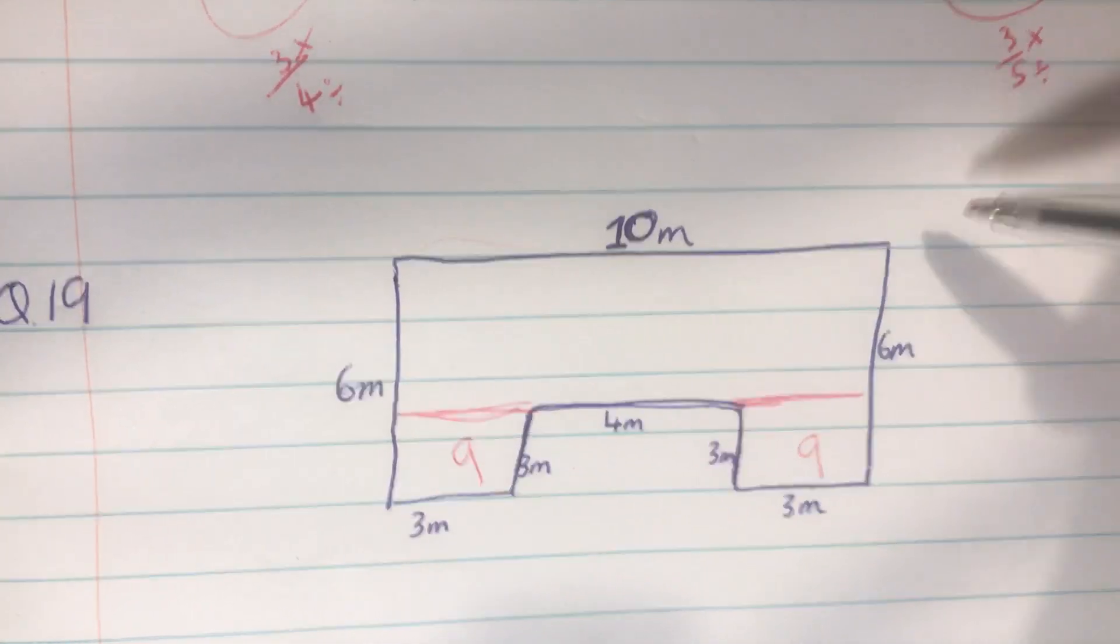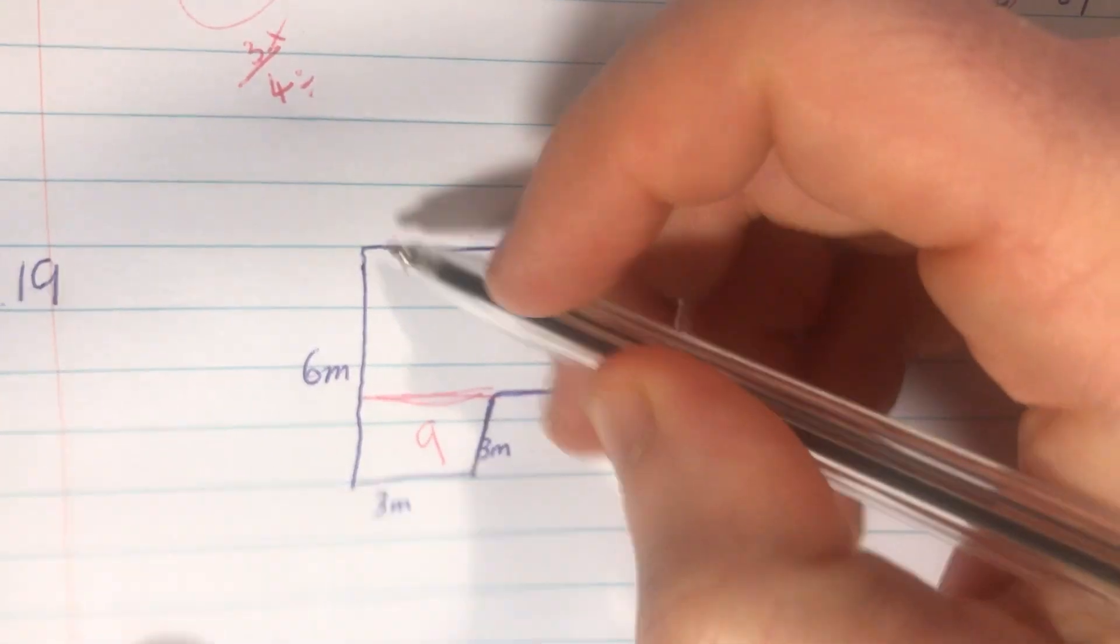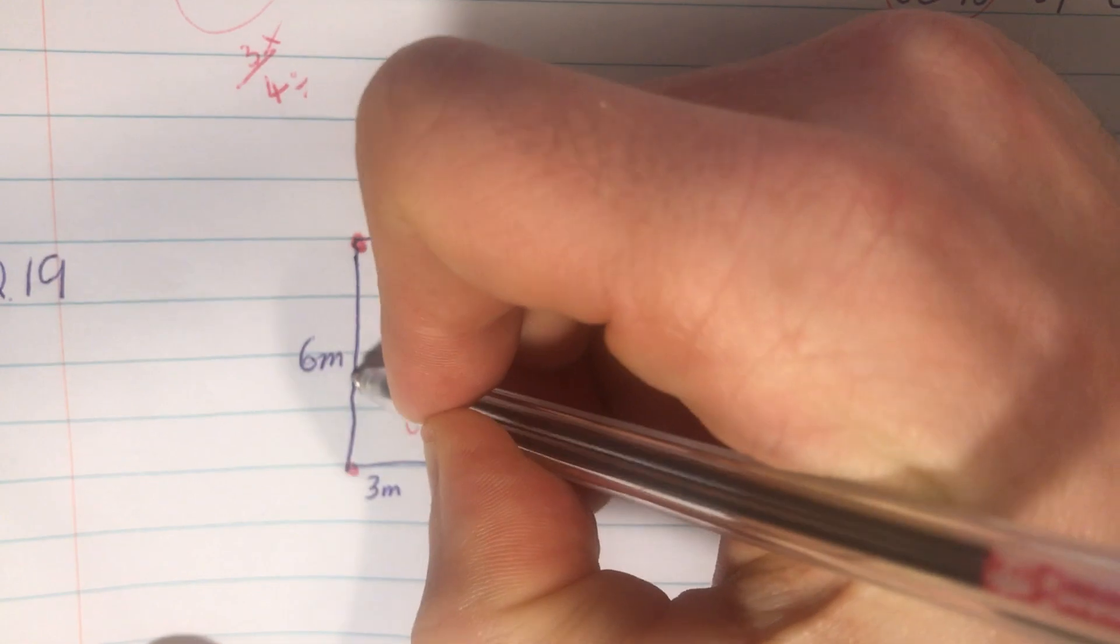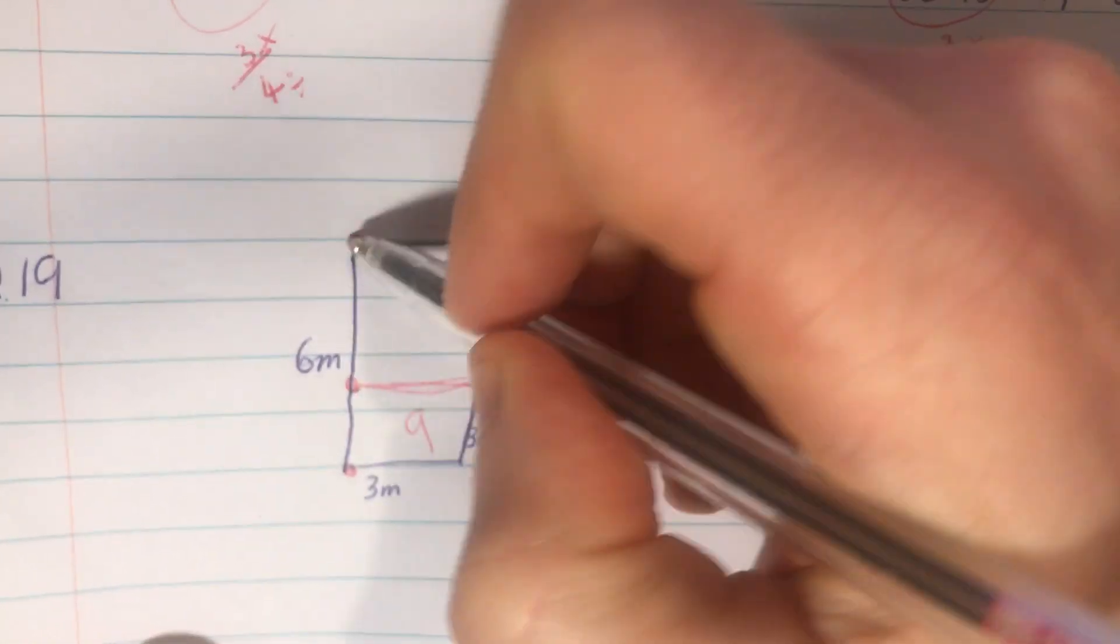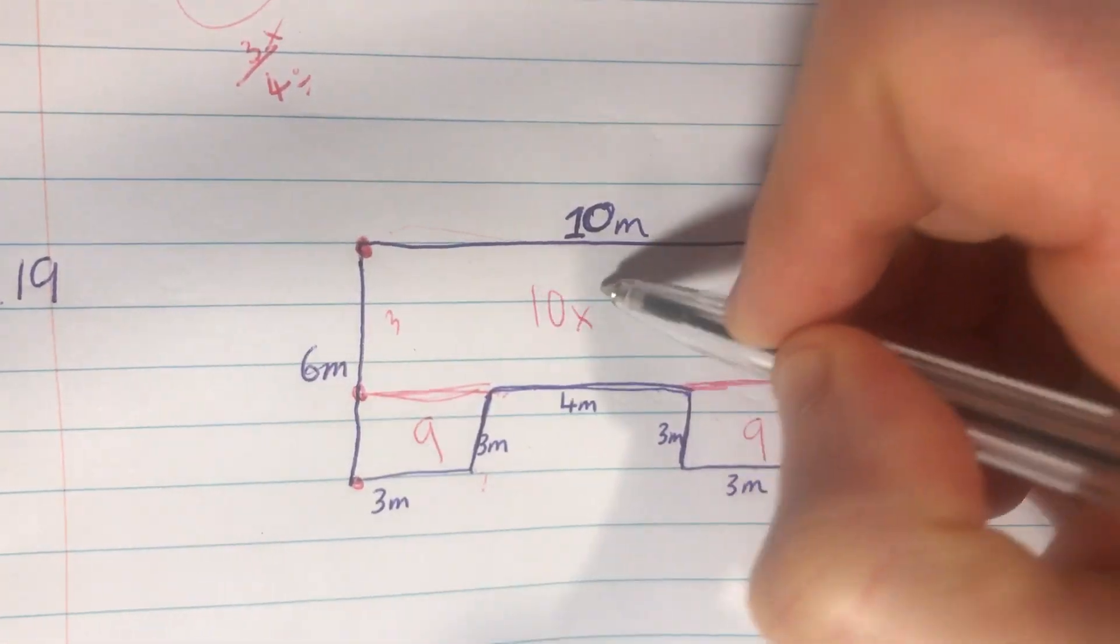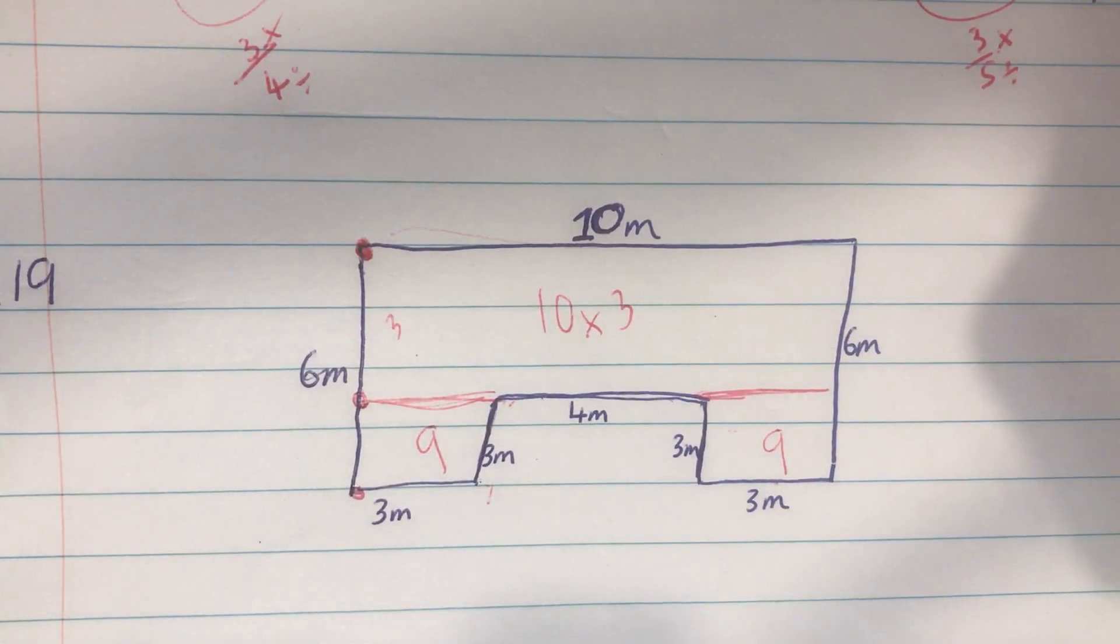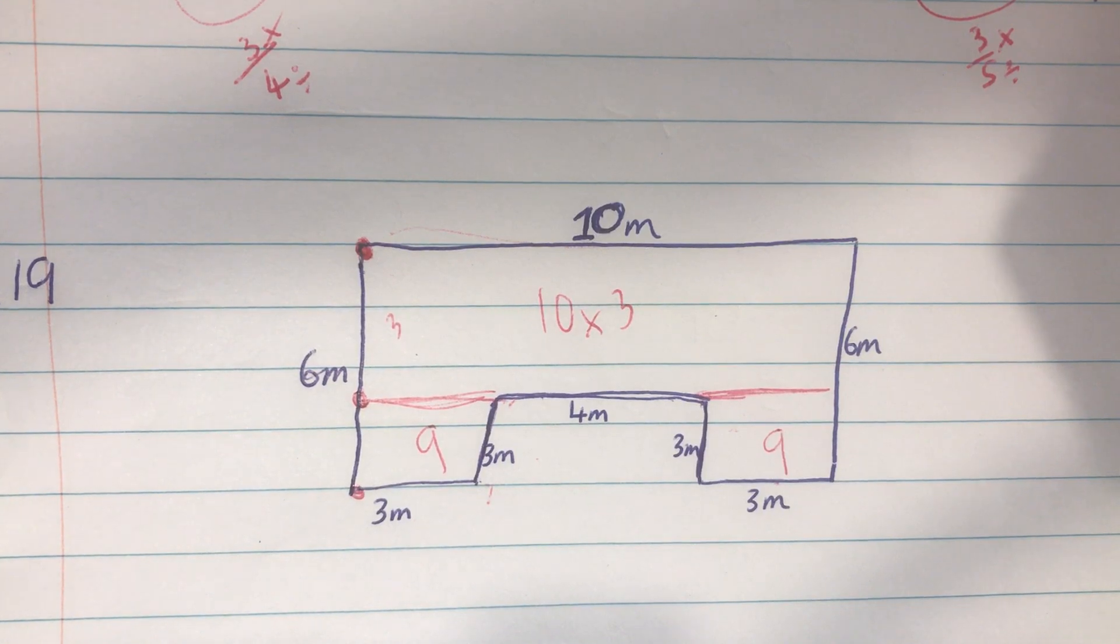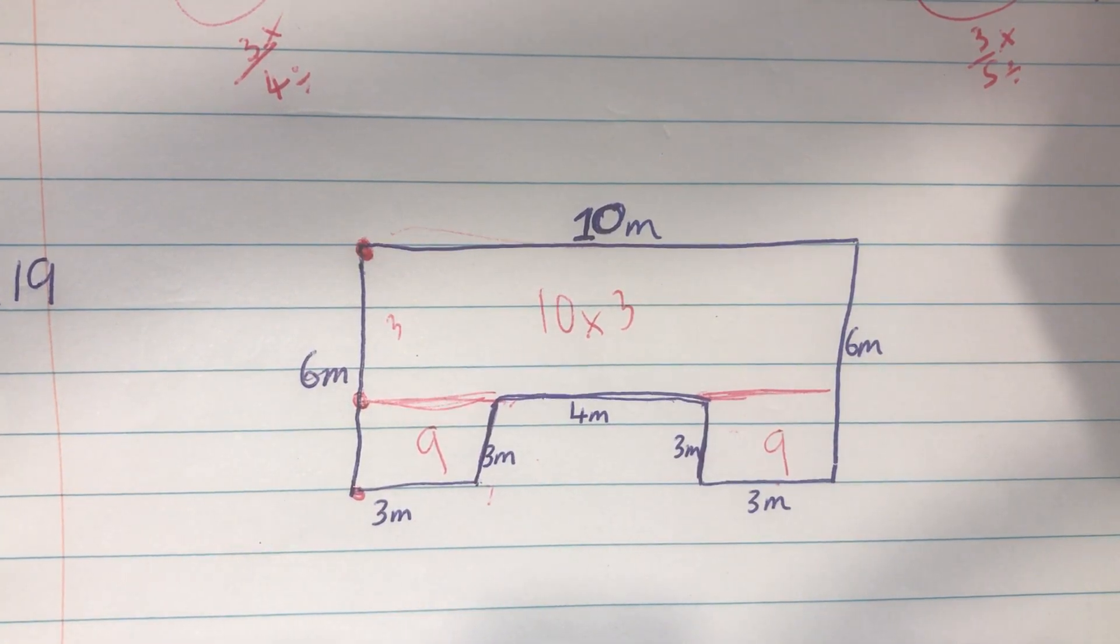Now, the bigger rectangle is going to be ten by what? It's not going to be ten by six, because remember, here to here is six, but we're only going from here to here. So, if there to there is three, here to here must be three as well. So, you'll need to go ten by three. Is that okay? And then you'll be able to find the area there.